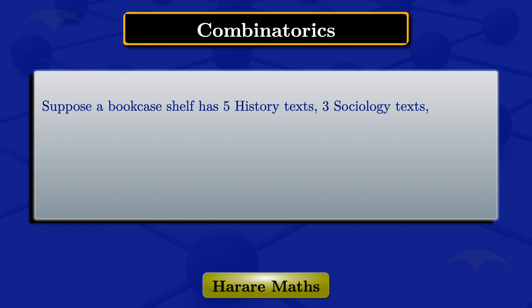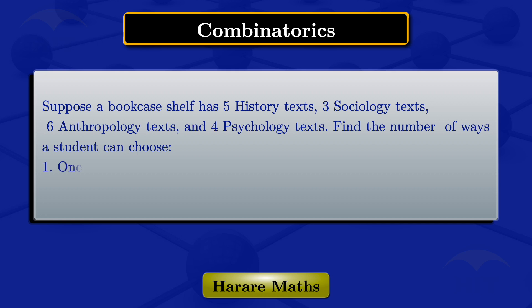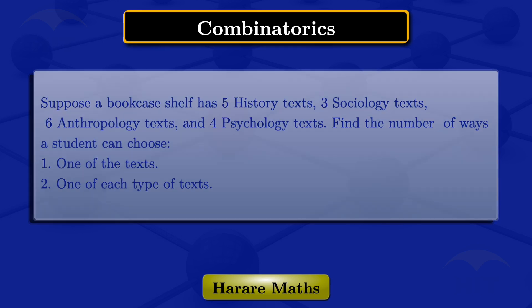Suppose a bookshelf has five history texts, three sociology texts, six anthropology texts, and four psychology texts. In this video, I'm going to find the number of ways a student can choose: number one, one of the texts; number two, one of each type of texts.